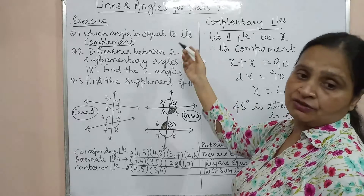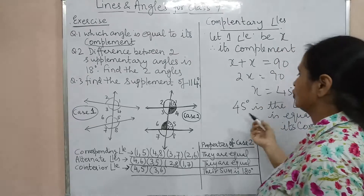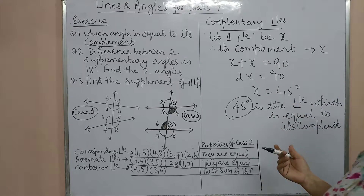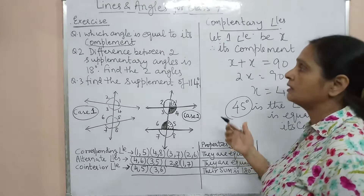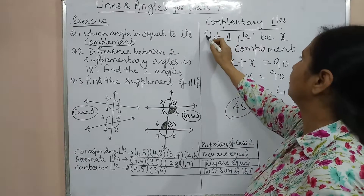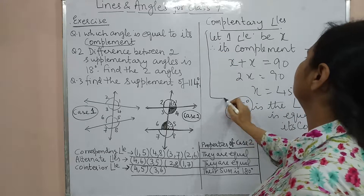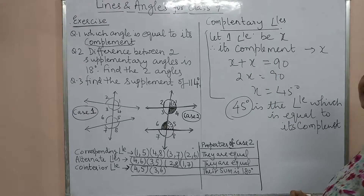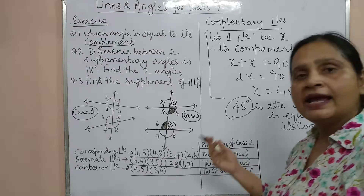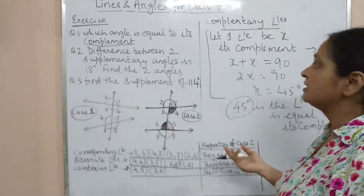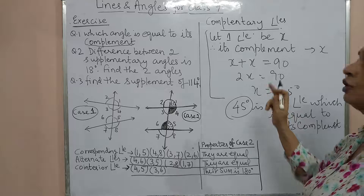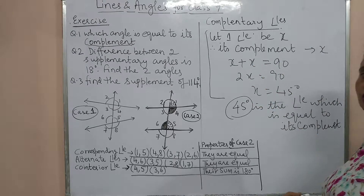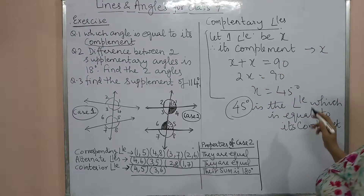If it is an objective type question, just give 45 degrees. If it is a two-mark subjective question, give a proper explanation: let the two angles be X and X. Since they are complementary, X + X = 90, so X = 45 degrees.